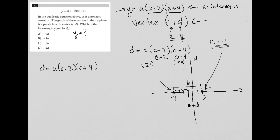I now know that c equals negative 1, so I'm going to replace c with negative 1. So d equals a, negative 1 minus 2, negative 1 plus 4. And then just simplify. d equals a, negative 3, positive 3. And therefore, d equals negative 9a.